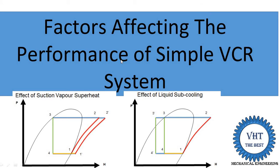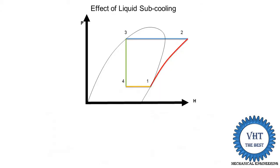In this video, I teach you factors affecting the performance of simple vapor compression refrigeration systems — how the refrigerating effect is reduced, work done is increased or reduced, how the COP is reduced or increased, and what the mass flow rate changes are, using simple methods or pH diagrams. The different factors that affect the COP are suction superheat, liquid subcooling, change in suction pressure, and change in delivery pressure.